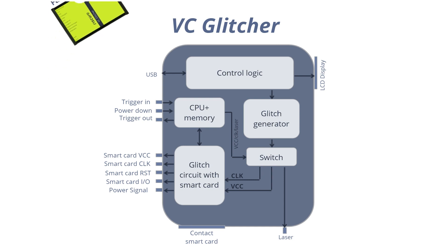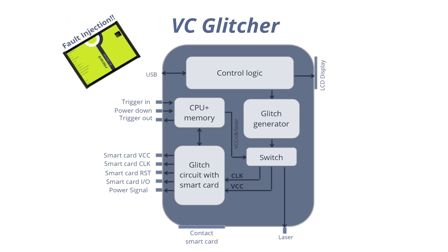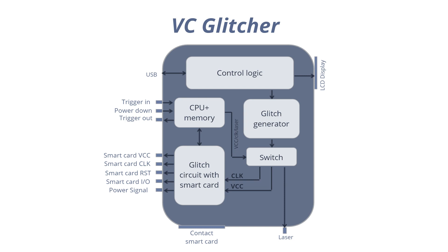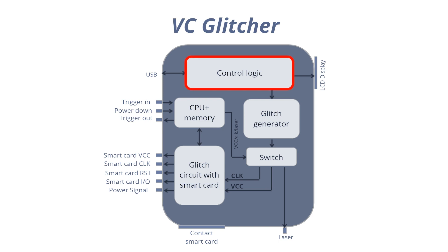VC Glitcher is RISC-EAR's basic tool for fault injection. In this concept, the user tries to change the internal electrical states of the device and observes the results. This is done by causing electrical disturbances in the form of glitches. These glitches can be applied in the voltage or even in the clock line of the device with the help of VC Glitcher. The form of the glitches is made by the control logic, and the exact time of the glitch is defined by the CPU.